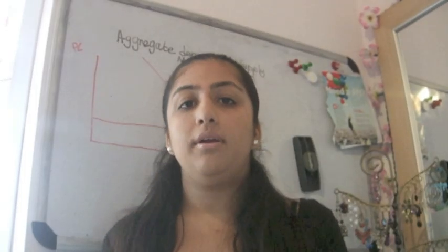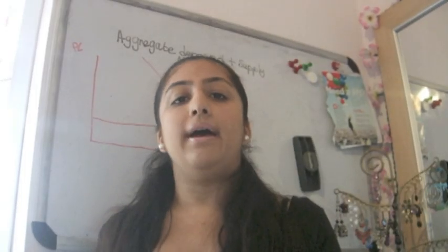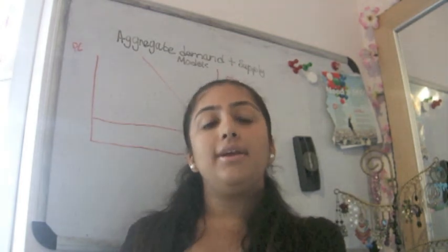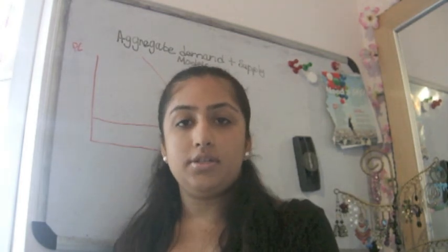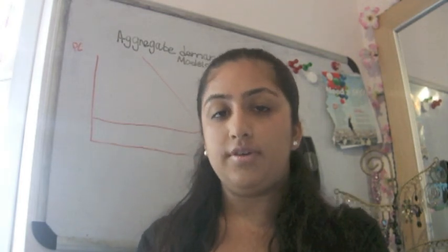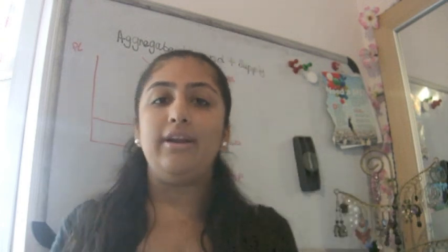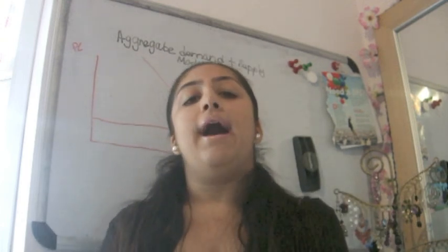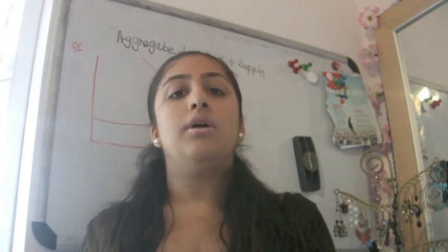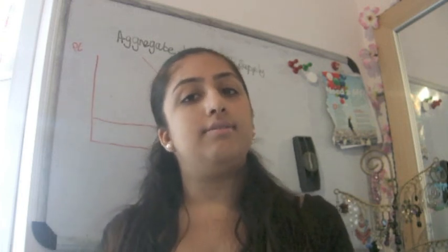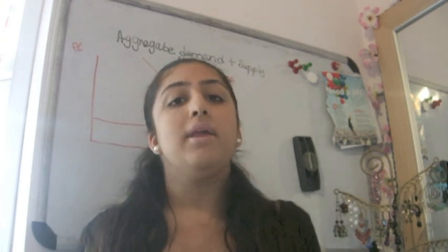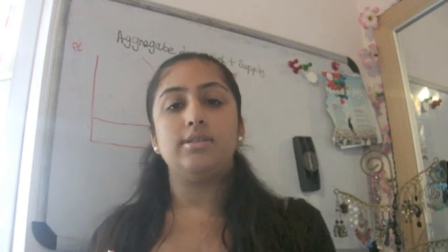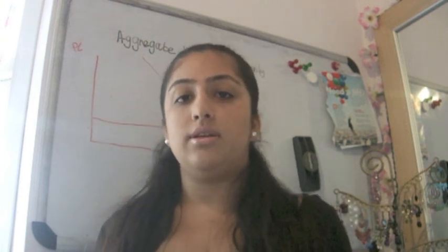Hello. In this video we're going to be looking at the two models of aggregate demand and aggregate supply, and then we're going to be looking at the factors which cause aggregate demand and aggregate supply to shift. So before we start, let's quickly remind ourselves: aggregate demand is the total value of goods and services demanded in an economy, and aggregate supply is the total amount of goods and services supplied or produced in an economy.